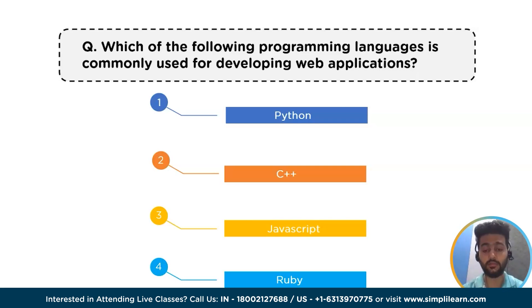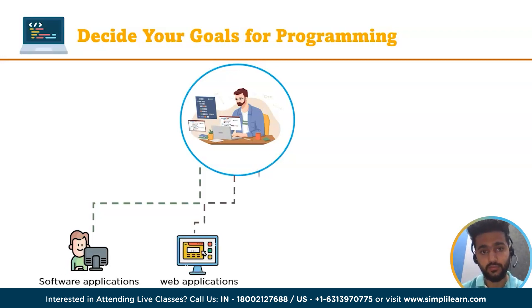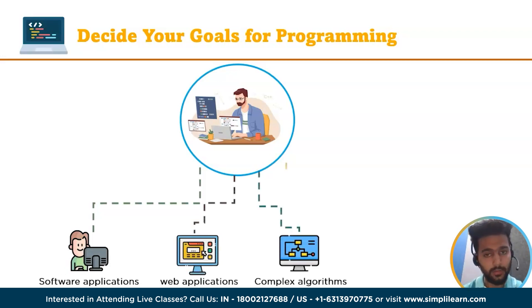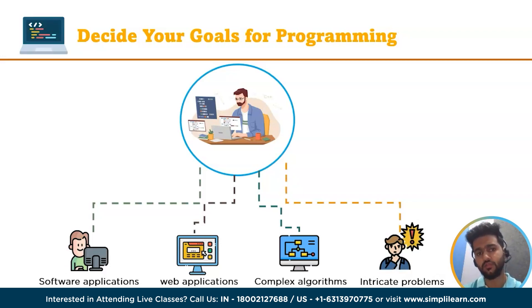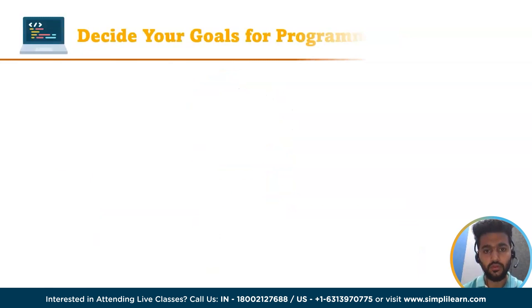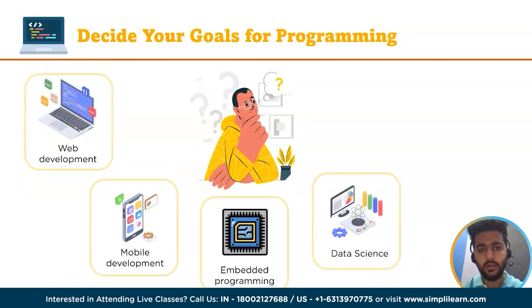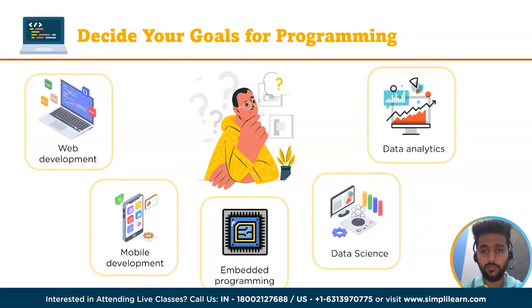Now let's begin with the first topic: decide your goals for programming. Programming is a broad term that encompasses a vast array of activities, from creating software applications and web applications to designing complex algorithms that can solve intricate problems. This field is constantly evolving and the possibilities of what can be achieved through programming are limitless. You have to decide what kind of programming you want to do — for example, web development, mobile development, embedded system programming, or data science and analytics.